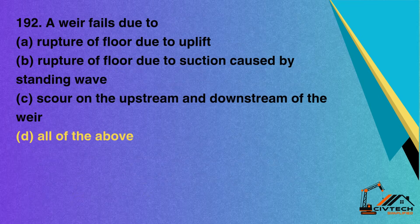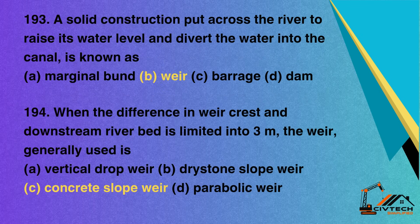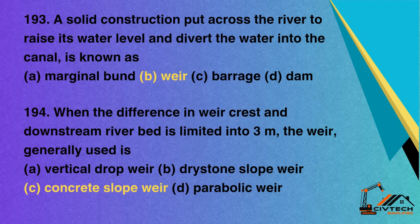Question 192: A weir fails due to — A. Rupture of floor due to uplift; B. Rupture of floor due to suction caused by standing wave; C. Scour on the upstream and downstream of the weir; D. All of the above. Correct option: D. All of the above. Question 193: A solid construction put across the river to raise its water level and divert the water into the canal is known as — A. Marginal bund; B. Weir; C. Barrage; D. Dam. Correct option: B. Weir. Question 194: When the difference in weir crest and downstream riverbed is limited to 3 meters, the weir generally used is — A. Vertical drop weir; B. Dry stone slope weir; C. Concrete slope weir; D. Parabolic weir. Correct option: C. Concrete slope weir.